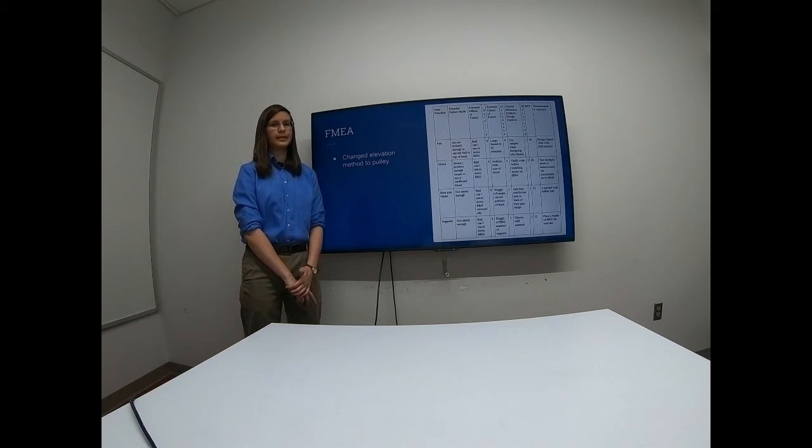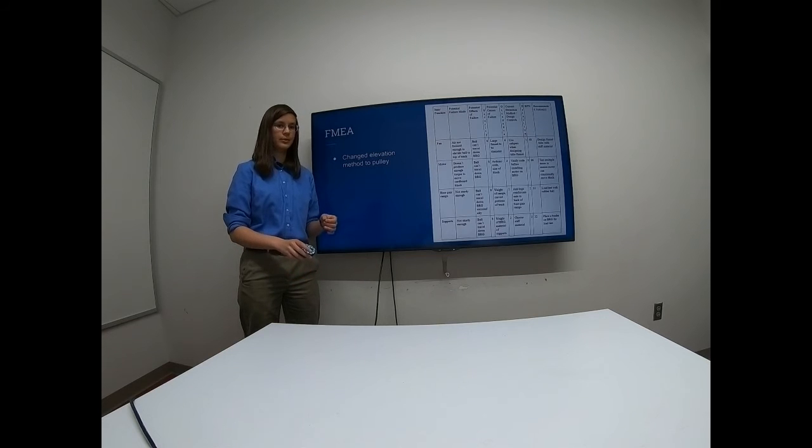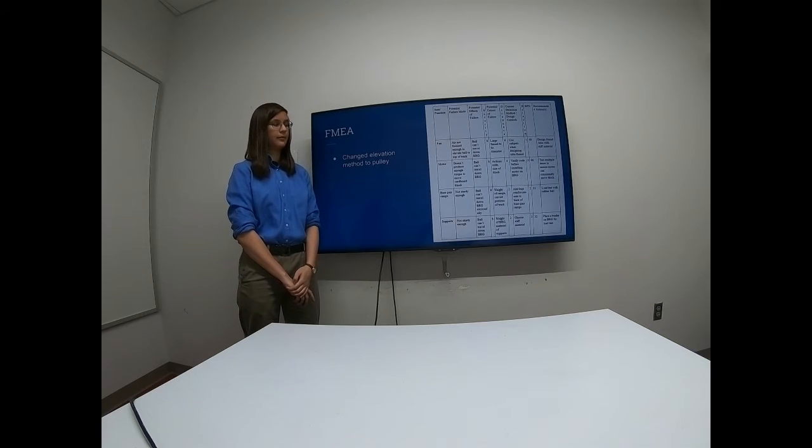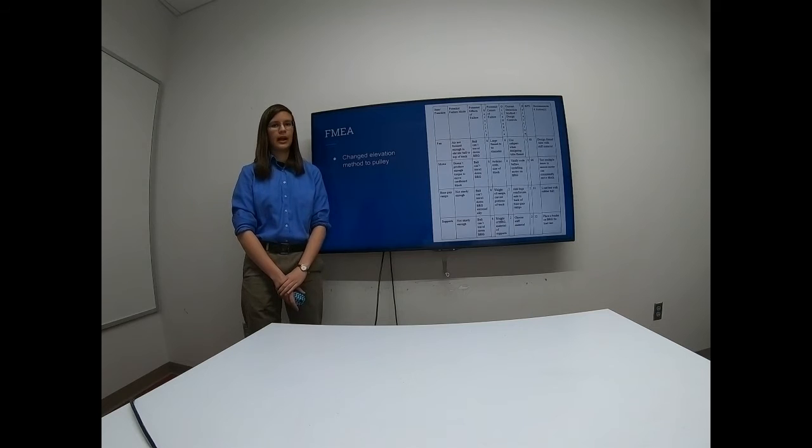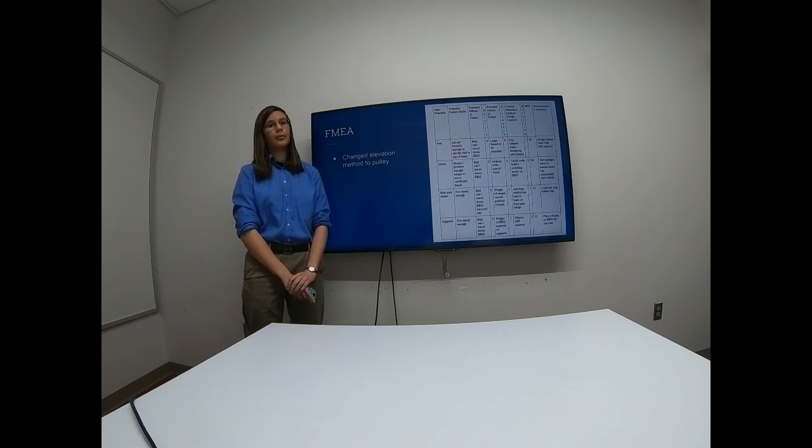So one additional concern we have about using the motor powered pulley system is that when the basket containing the ping pong ball is raised to the top of the BRG, that the ping pong ball might not tip out of the basket correctly onto the start of the first base pair ramp. And so then the ping pong ball wouldn't be able to travel down the BRG successfully. The other two components of the BRG that we had concerns about from DP2 were the base pair ramps and the supports for the ramps not being sturdy enough, but that turned out not to be a concern with our final design.